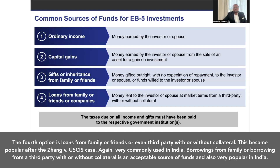The fourth option is loans from family, friends, or a third party with or without collateral. This became popular after the Zhang versus USCIS case. Borrowing from family or from a third party with or without collateral is an acceptable source of funds and also very popular in India.